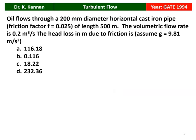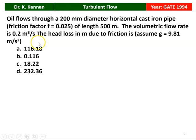The next question, again from the 1994 question paper: Oil flows through a 200 mm diameter horizontal cast iron pipe with a friction factor of 0.025 and length 500 m. The volumetric flow rate is 0.2 m³/s. We have to calculate the head loss due to friction in the turbulent flow.